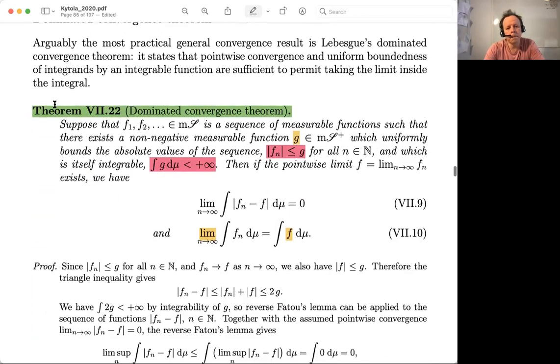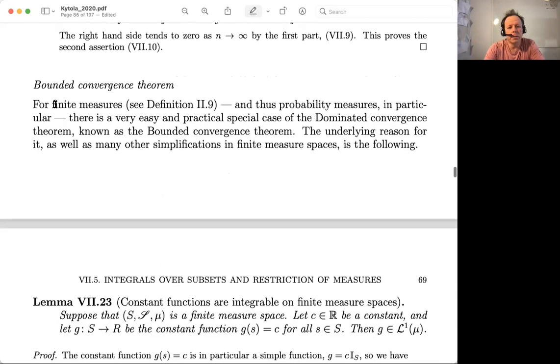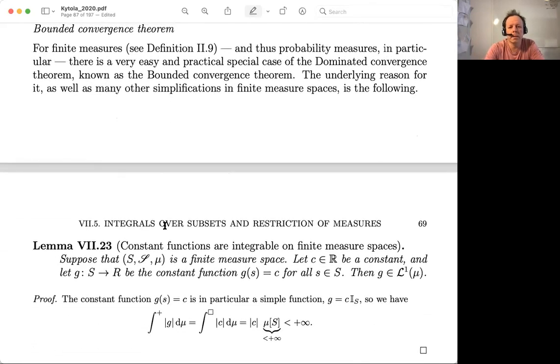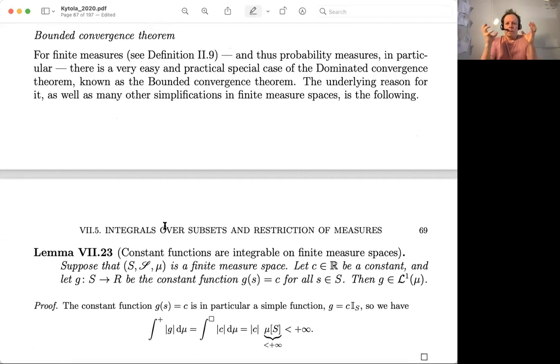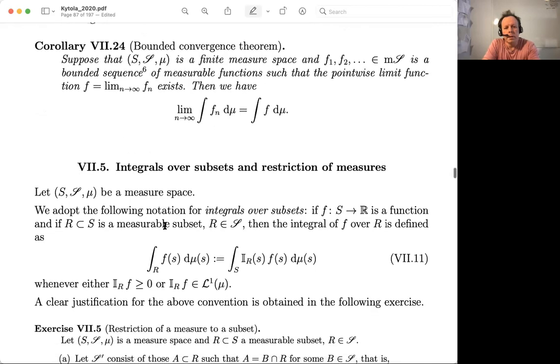And then a special case of dominated convergence theorem is called bounded convergence theorem. So for probabilities, if you have a bounded sequence of random variables, then for probabilities you get what you want. And that's the bounded convergence theorem.